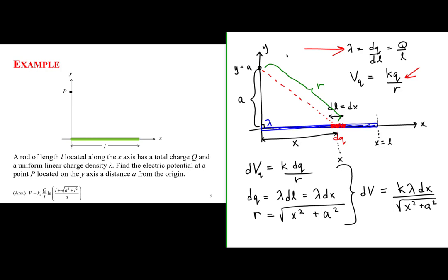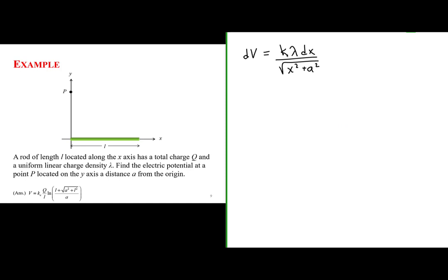Now we know the electric potential due to that tiny charge element dQ at the point y equals A. All we have to do is sum up over the infinite number of infinitesimally small point charges, which we do by integrating. We integrate both sides and decide on the limits of integration. We take a point that is infinitely far away as the start of our integration interval.